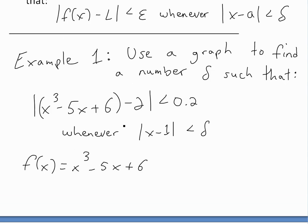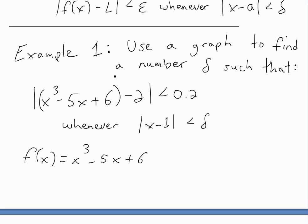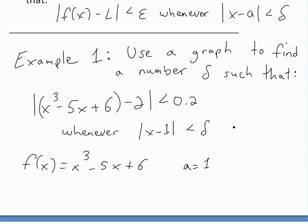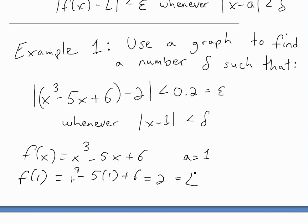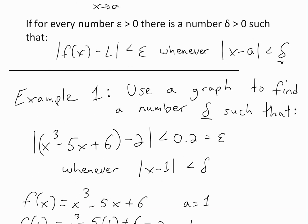So that's f of x, and this 2 is going to be L — the limit. With this example we can just plug in: a is equal to 1, and 0.2 is equal to epsilon. If we plug in f of 1, we get 1 cubed minus 5 times 1 plus 6, which is 1 minus 5 plus 6, equaling 2. So this is equal to L, our limit. Now we're just going to use the graph to find delta.